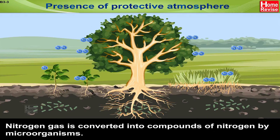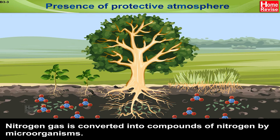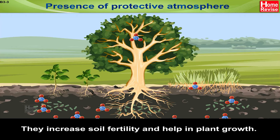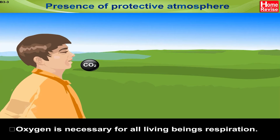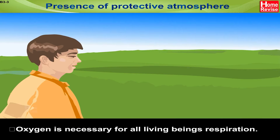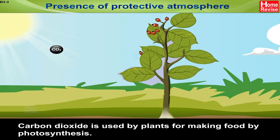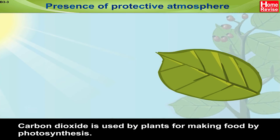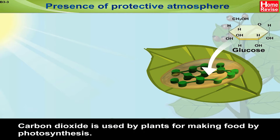Nitrogen gas is converted into compounds of nitrogen by microorganisms. They increase soil fertility and help in plant growth. Oxygen is necessary for all living beings' respiration. Carbon dioxide is used by plants for making food by photosynthesis.